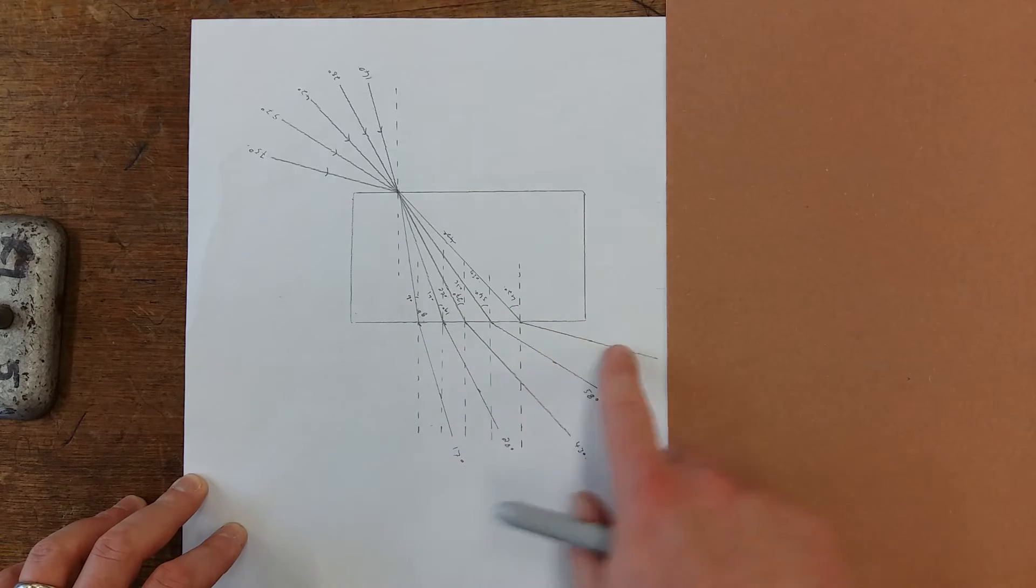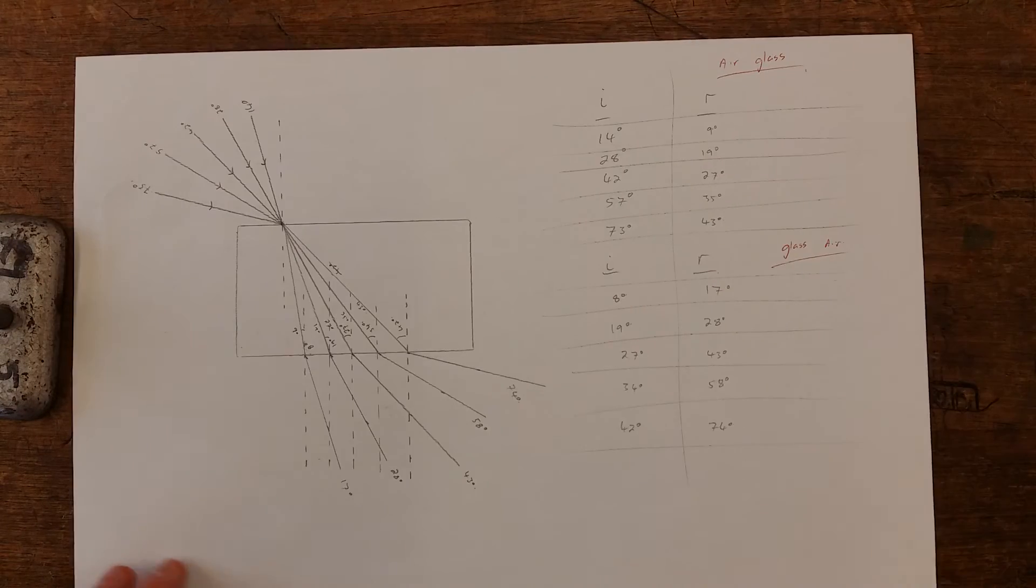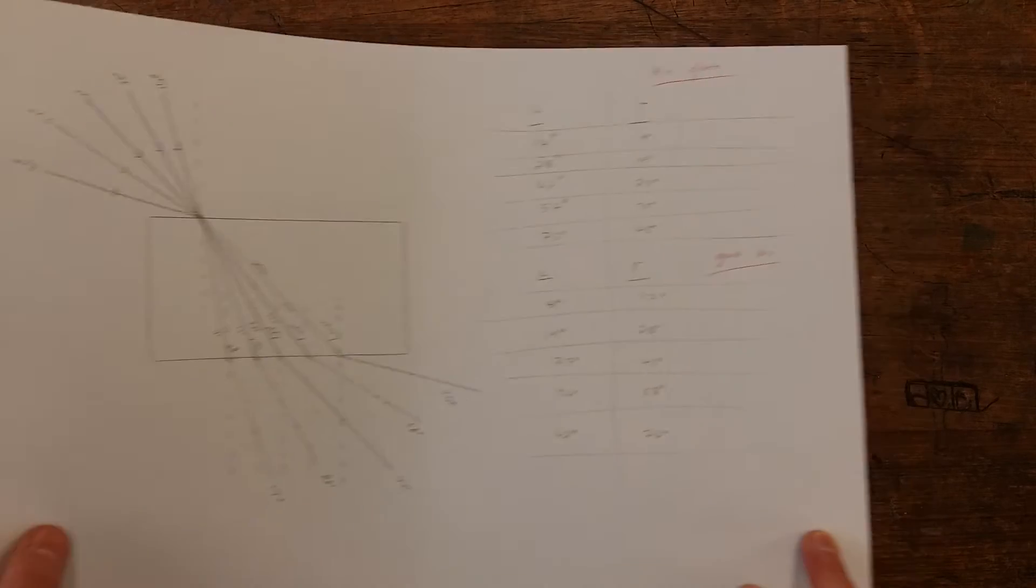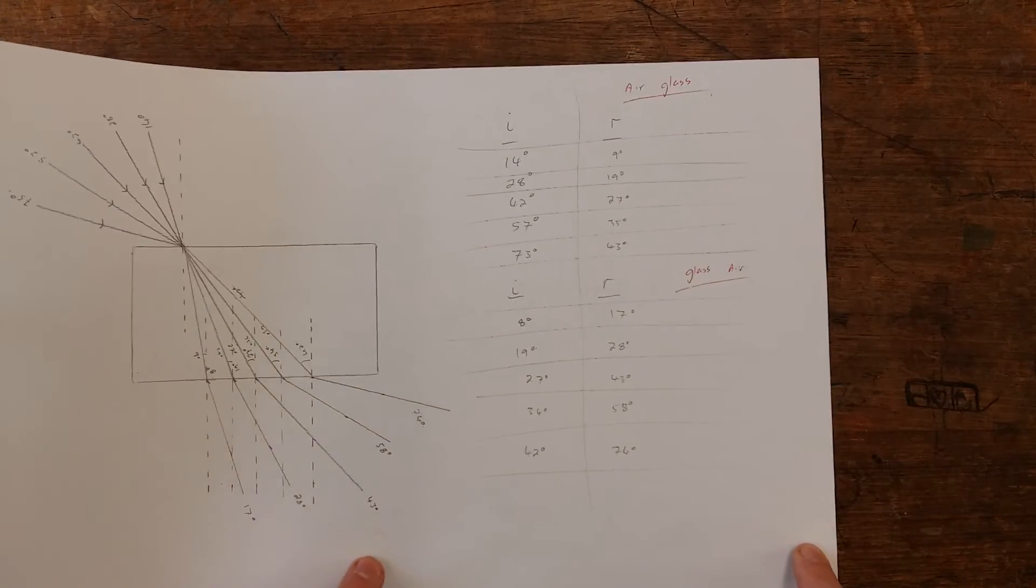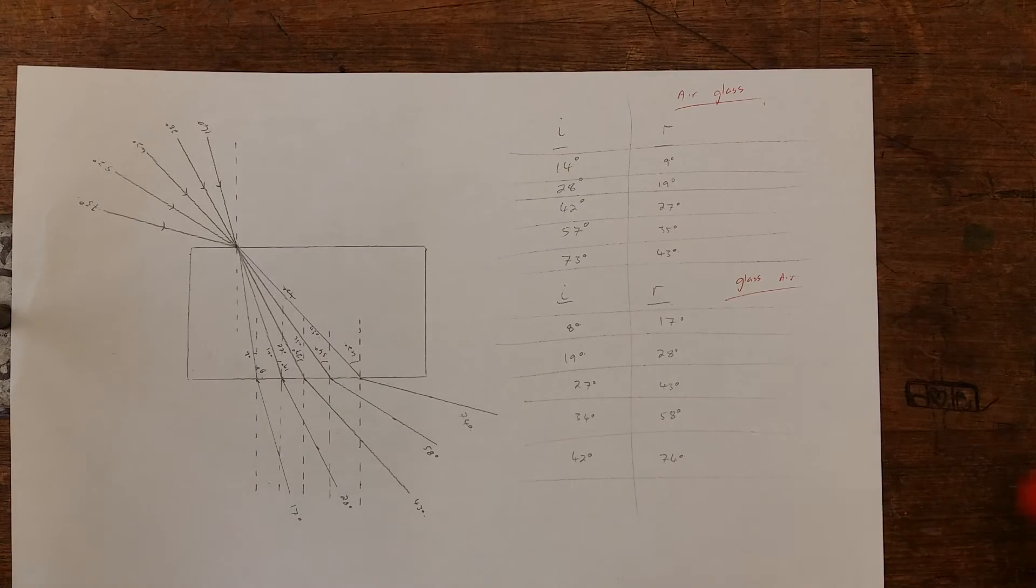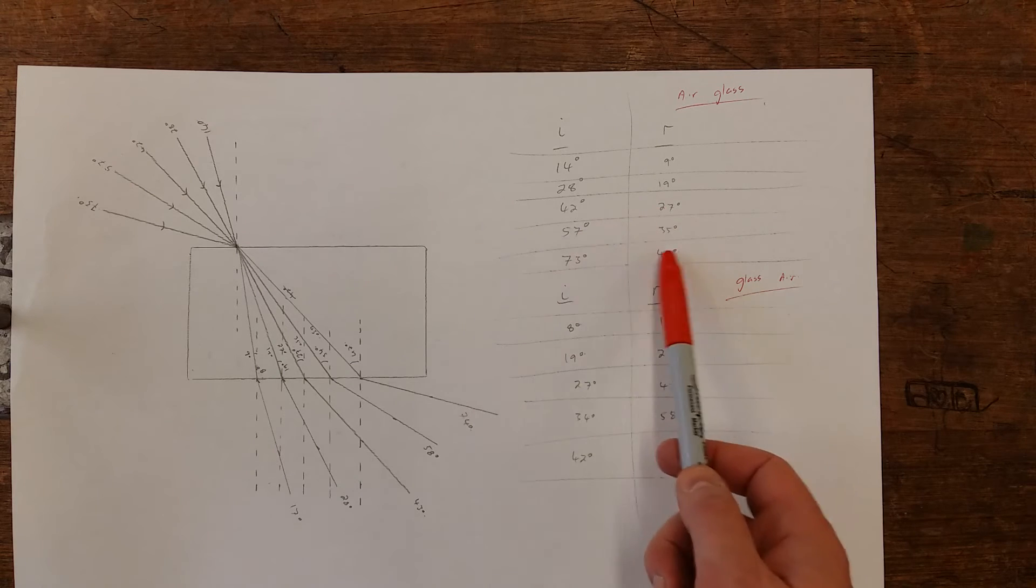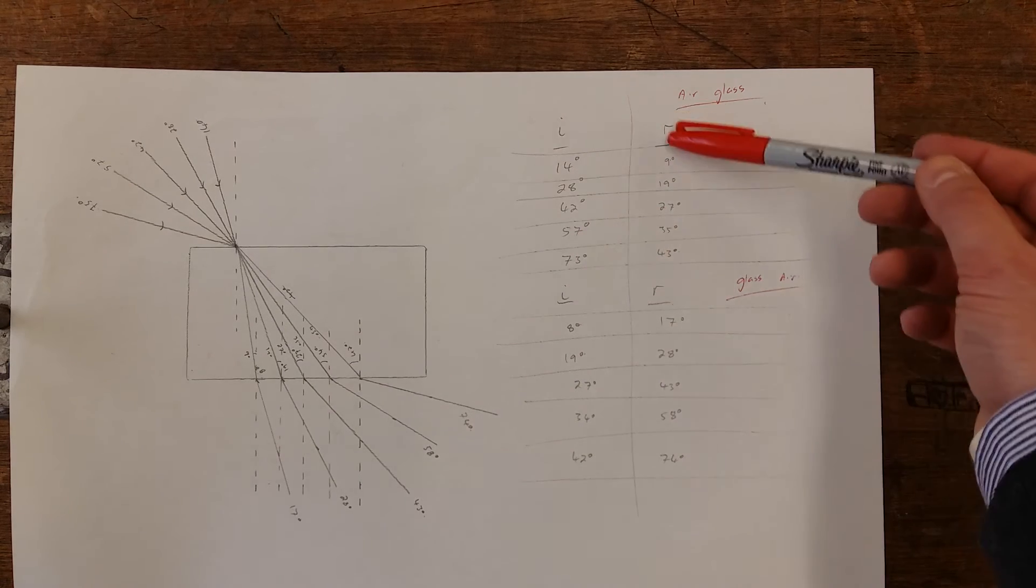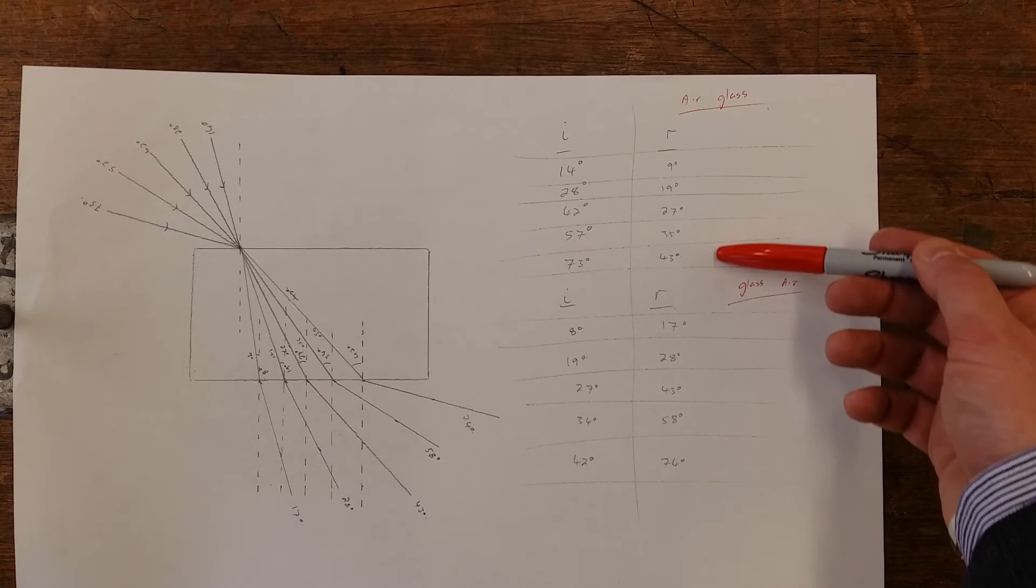Having a look at the air-to-glass situation, we end up with the following results. You can see how there is a definite difference in this section here where we've got the incident and refracted rays as it goes from air to glass, more dense, so the refracted ray is less.